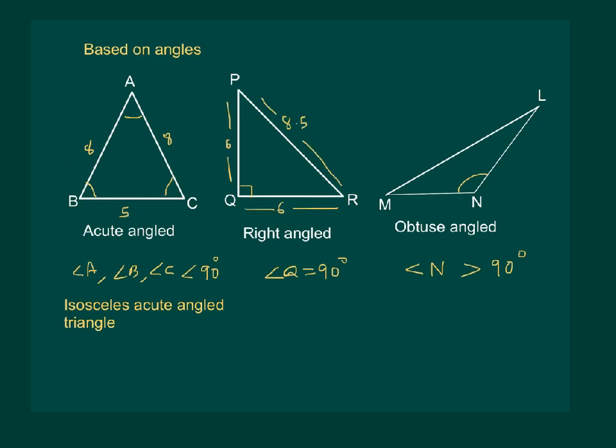Similarly, triangle PQR can be an isosceles right-angled triangle.